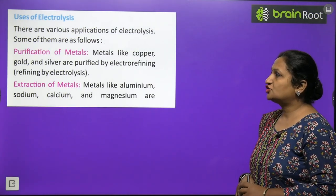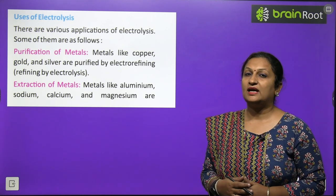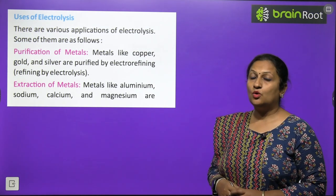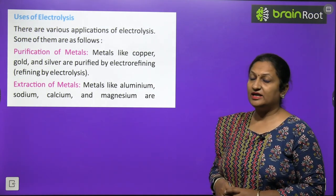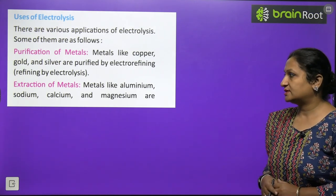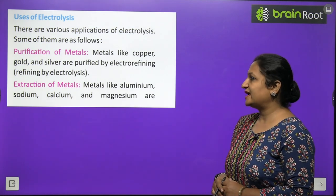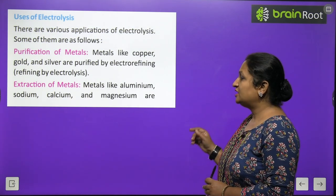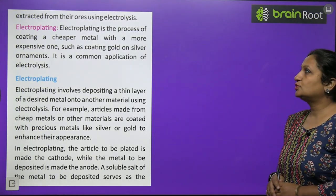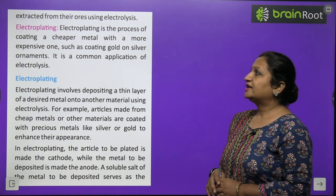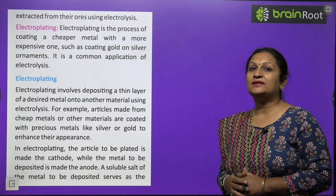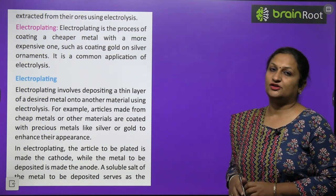Uses of electrolysis: electrolysis is used in many applications today. First, purification of metals — metals like gold, silver, and copper can be purified by electrolytic refining. Second, extraction of metals — metals like aluminium, sodium, calcium, and magnesium are extracted from their ores by electrolysis. Third, electroplating — in which a coating of one metal is applied over another metal using electrolysis.